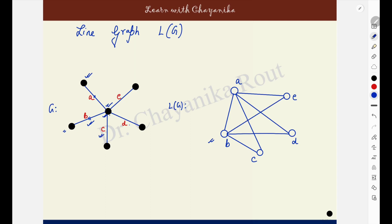Next, come to edge C. C is sharing its end point with edges A, B, D and E. The vertex C should be made adjacent to A, B, E and D. It is already made adjacent to A and B, so I will make it adjacent to D and E. Next come to edge D. D is sharing this particular end point with all the other edges A, B, C and E. D will be made adjacent to A, B, C — already done — and E is left, so I will make that adjacency.